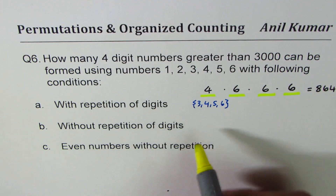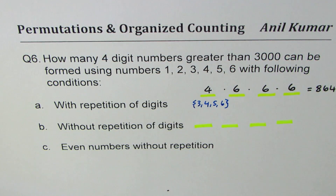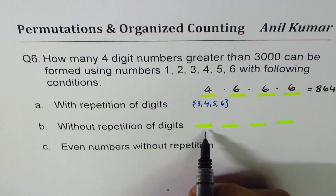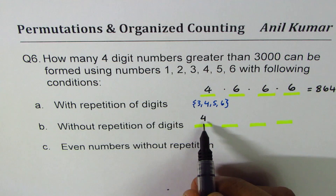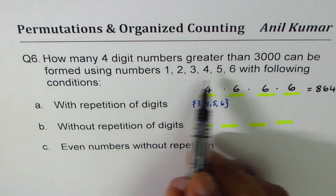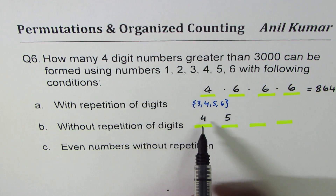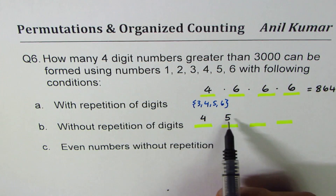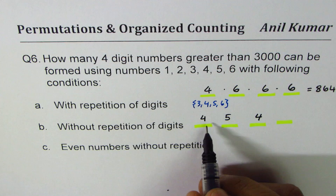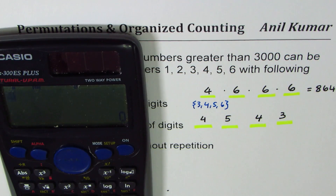Now let's do part b — without repetition of digits. It's a similar question but with a major difference: we cannot repeat digits. In the thousands place we still have four options. Once we place a number there, we can't use it again, so we're left with five numbers for the next place, then four, then three. So the count is four times five times four times three, which gives 240.